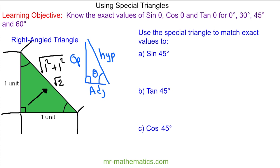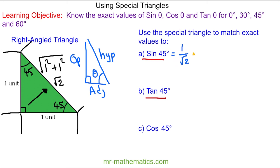The sine of 45° is the opposite divided by the hypotenuse. Since both angles are 45°, I'll use one of them: the opposite is 1 and the hypotenuse is √2, giving sin 45° = 1/√2. This is valid, but I'm going to rationalize the denominator by multiplying numerator and denominator by √2, which gives √2/2. This is the exact solution with a rational denominator.